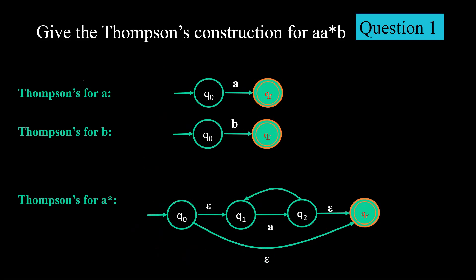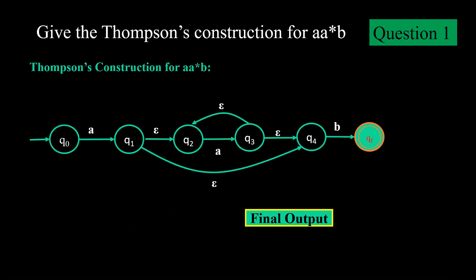Now we will start with some Thompson's construction examples. First is aa*b. We have a Thompson's for a, a Thompson's for b and we want a Thompson's for a*. Then we have concatenation a into a* into b. So we are first coming up with a followed by a* and then we have b in concatenation and we get the final output. Why only 4 epsilon? Because we have only a*. Concatenation 0 epsilon and we move to the final state.